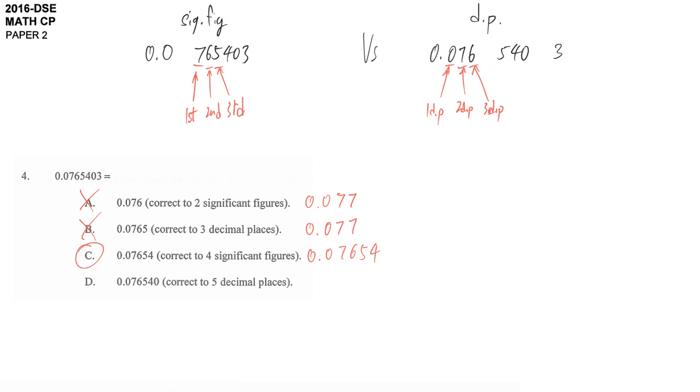We try D also. So 5DP, so 1, 2, 3, 4, 5 until 4 here. It should be 0.07654. Correct to 5DP.